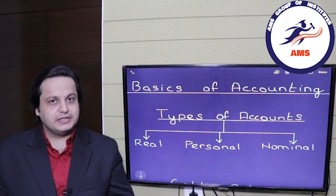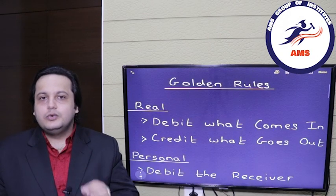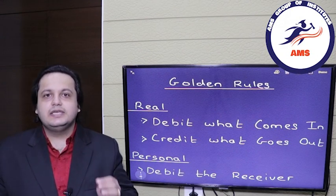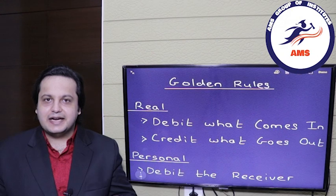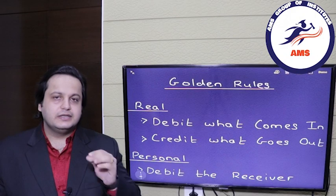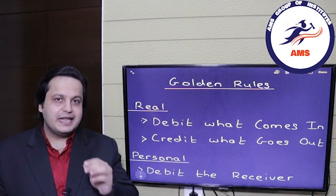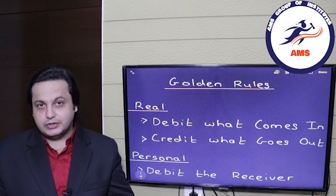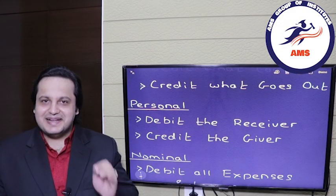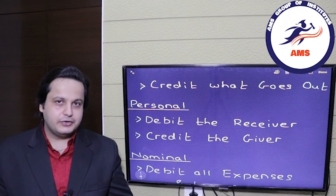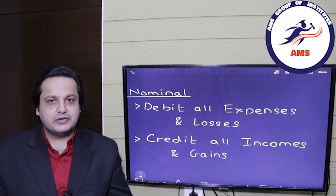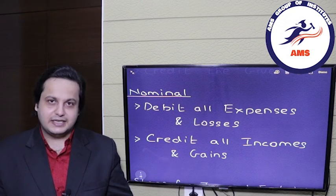Let's move forward with the golden rules. The golden rules are very important for any accounting student because all the accounting in the world is done with these golden rules. The rule for real account is: debit what comes in and credit what goes out. For personal account: debit the receiver and credit the giver. And for nominal account: debit all expenses and losses, and credit all incomes and gains.